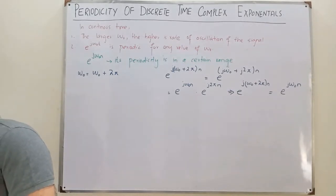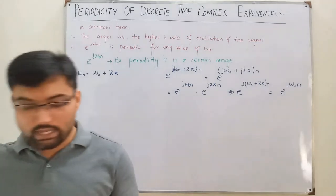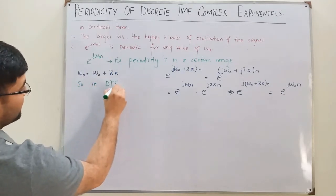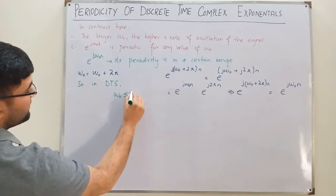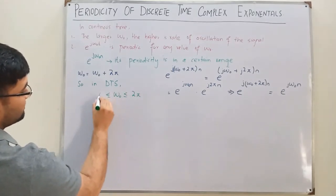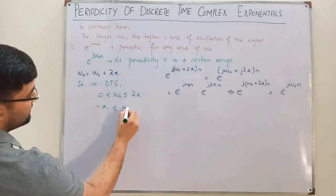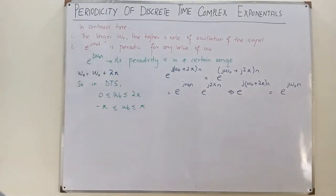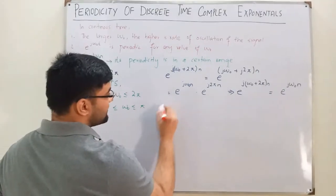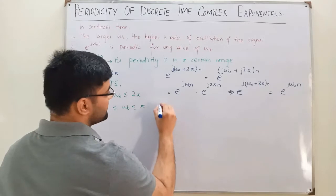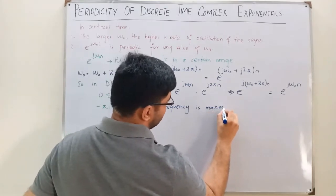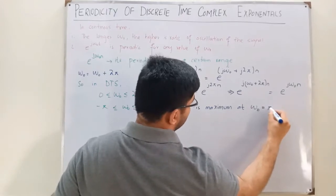In continuous time, you get a new signal with any other frequency, but here you got the same signal back. So in discrete time signals, the range of omega naught is between 0 and 2 pi, or equivalently from negative pi to positive pi. Frequency is maximum at omega naught equal to pi.